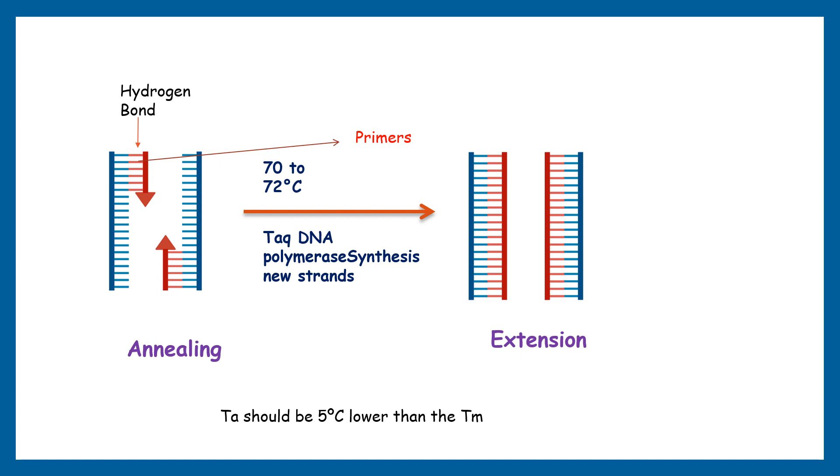During the process, hydrogen bonds form between the nucleotides of the primer and the DNA strand. Once the binding is assured, Taq DNA polymerase starts synthesizing the strand by using the three prime hydroxyl end of the primer.